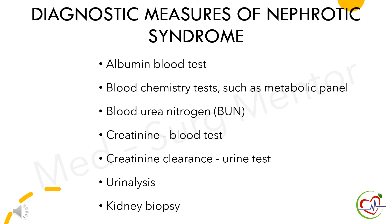Major diagnostic measures for nephrotic syndrome include albumin blood test, blood chemistry tests such as metabolic panel, blood urea nitrogen and creatinine, creatinine clearance urine test, urinalysis, and kidney biopsy.